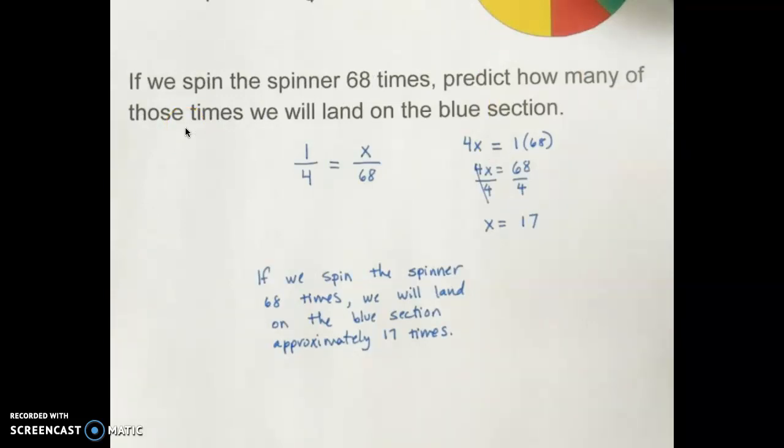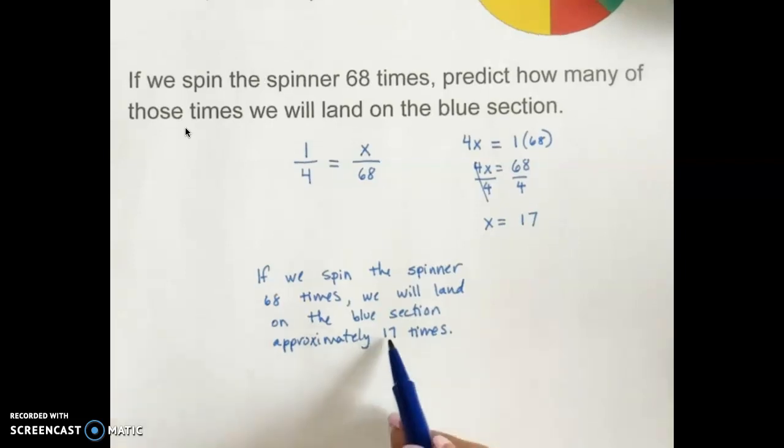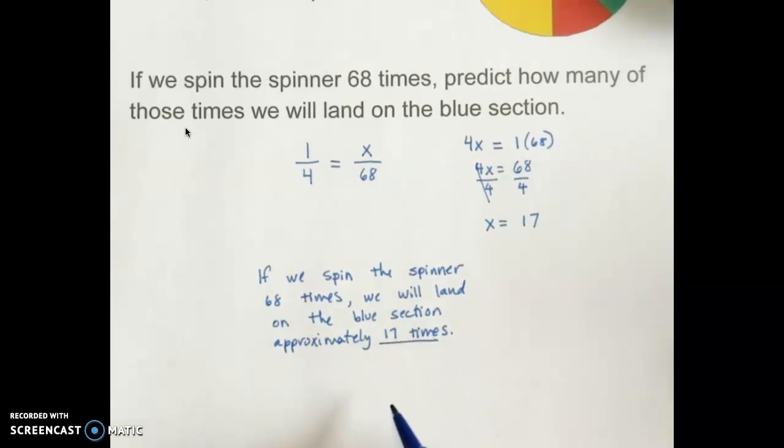The sentence I wrote was, If we spin the spinner 68 times, we will land on the blue section approximately 17 times. Your answer does not need to be exact word for word, but you should be stating the answer that we calculated 17 times, and you should state that we did the trial 68 times.